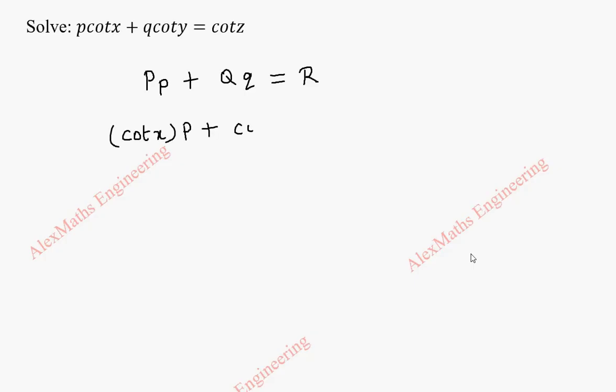In the same way, second term is cot y into small q and the last term is cot z. Now by comparison, we know capital P is cot x, capital Q is cot y, R is cot z.